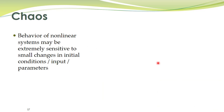Another interesting phenomenon exhibited by non-linear systems is chaos. In linear systems, if you slightly change the initial conditions, there is only a slight change in the response. Likewise, slight changes in input or parameters do not significantly change system behavior. However, for non-linear systems, the behavior is extremely sensitive to small changes in initial conditions, inputs, and parameters. This phenomenon is called chaos.